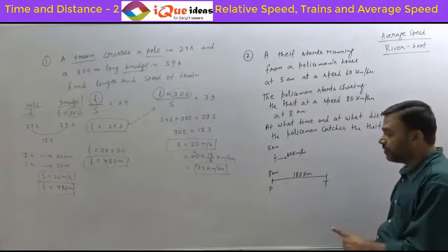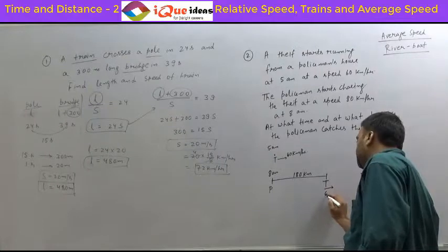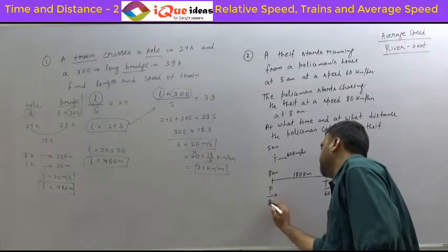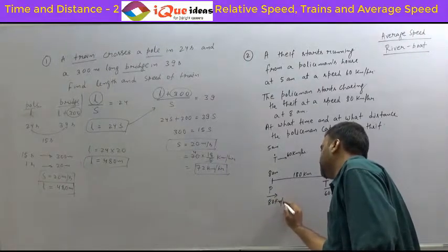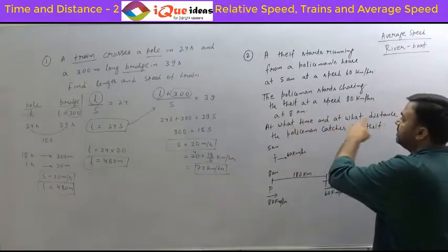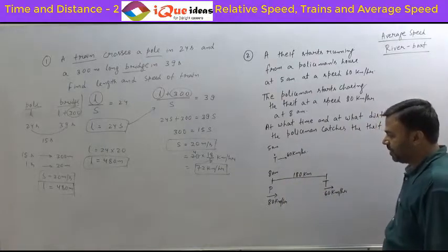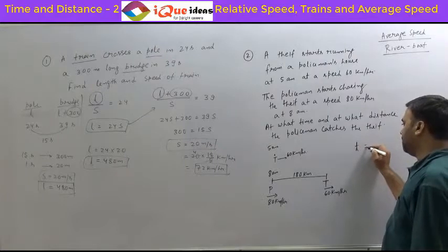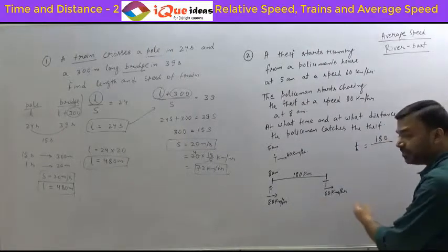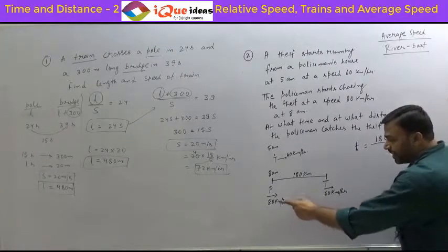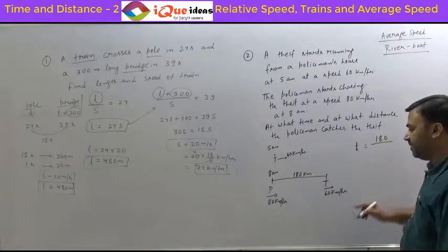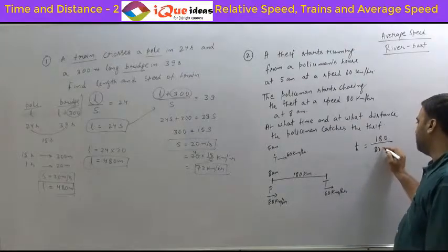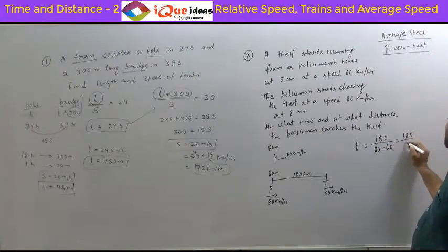This becomes a situation of relative speed. The thief is running at 60 km/h and the policeman is running at 80 km/h. Since the policeman is chasing, both are running in the same direction. The time taken will be equal to the distance of 180 km divided by the relative speed. Since they are in the same direction, we subtract: 80 minus 60 equals 20. So it is 180 divided by 20.